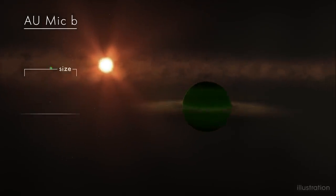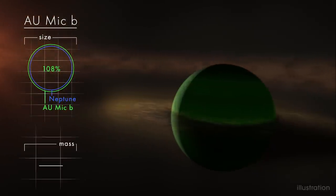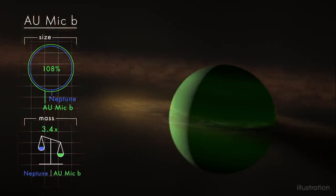TESS data show the newly discovered planet is about 8% larger than Neptune, with no more than about 3.4 times its mass.